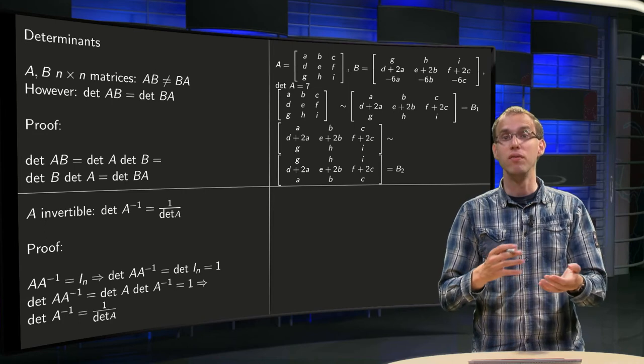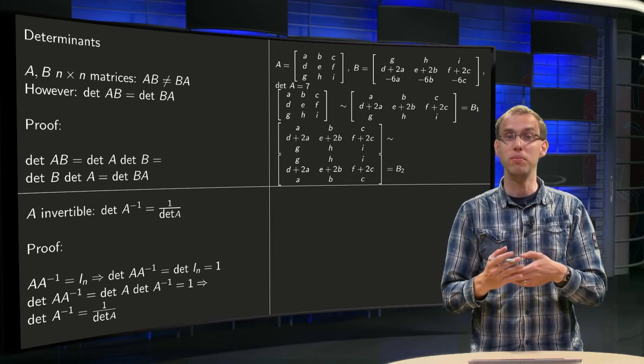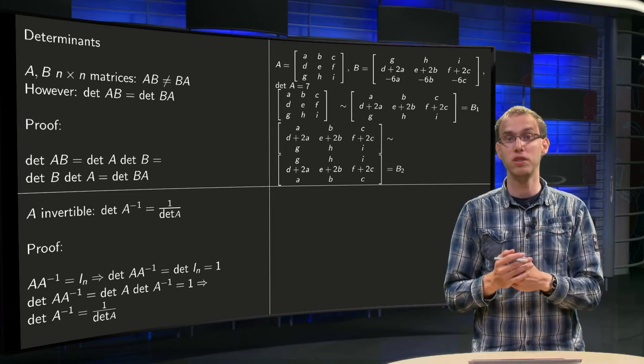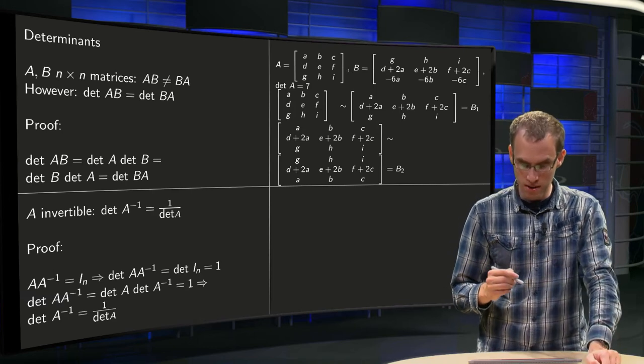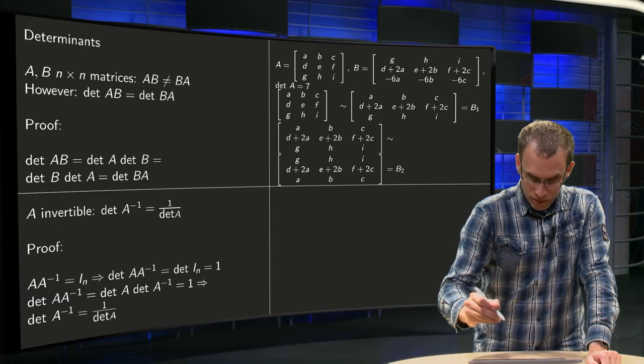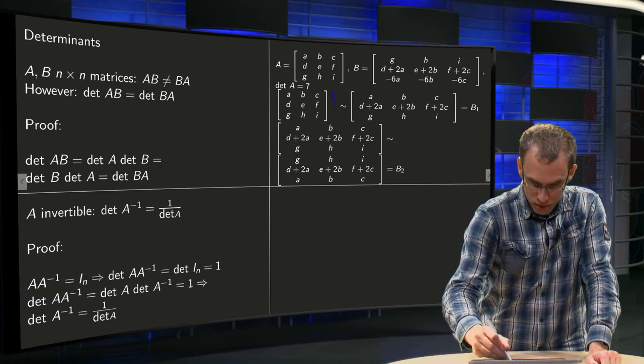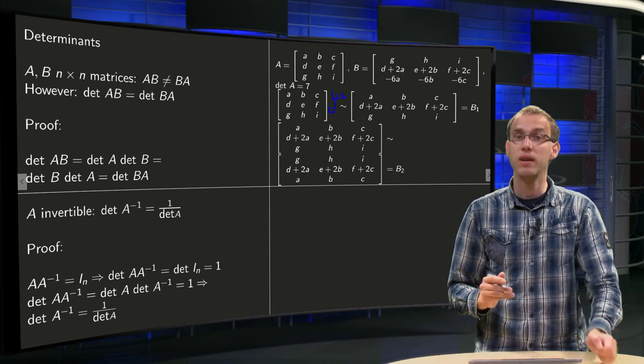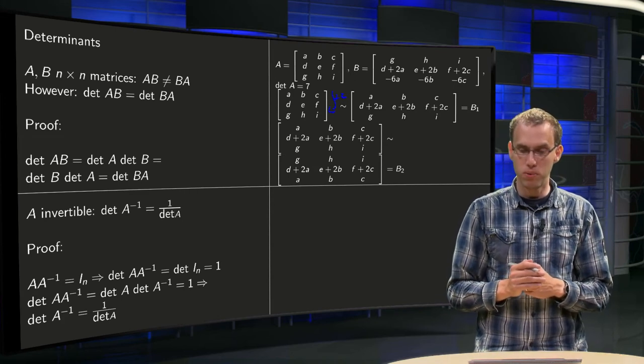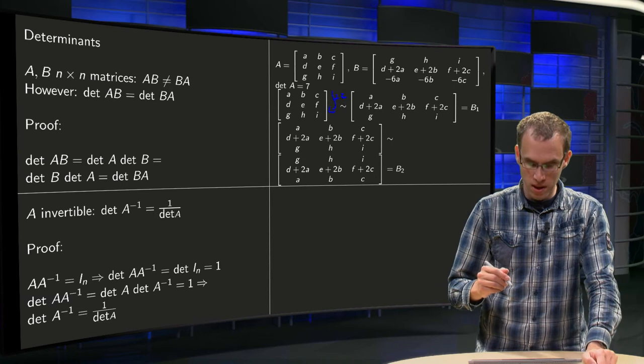Because if we can, we know how to compute the determinant of B, because we know what row operations do with the determinant. So let's start with A and see whether we can get B. Well, first of all, we can add the first row two times to the second row. A looks already a bit more like B, let's call that one B1. Then you see, if we want to get closer to B,